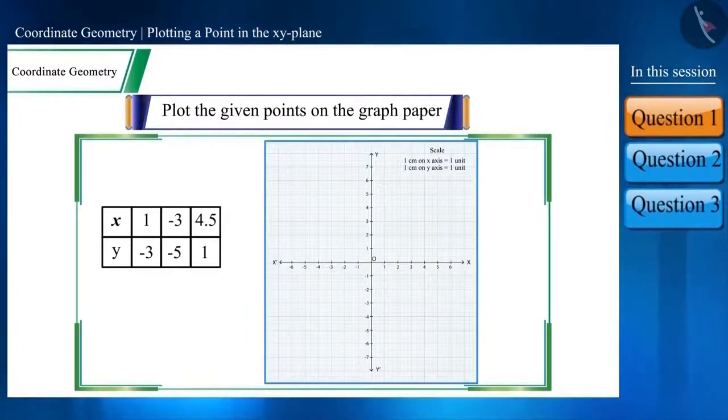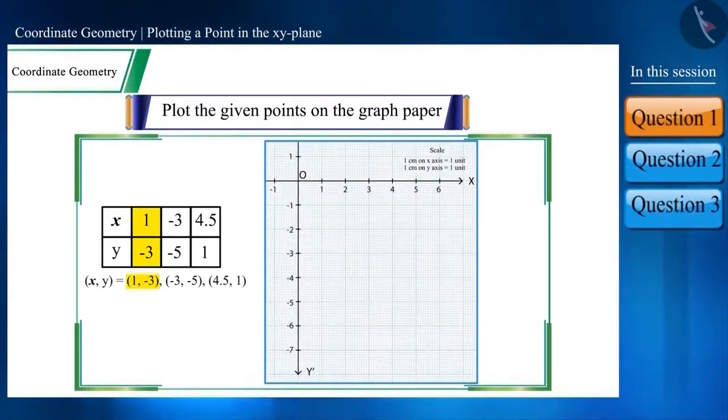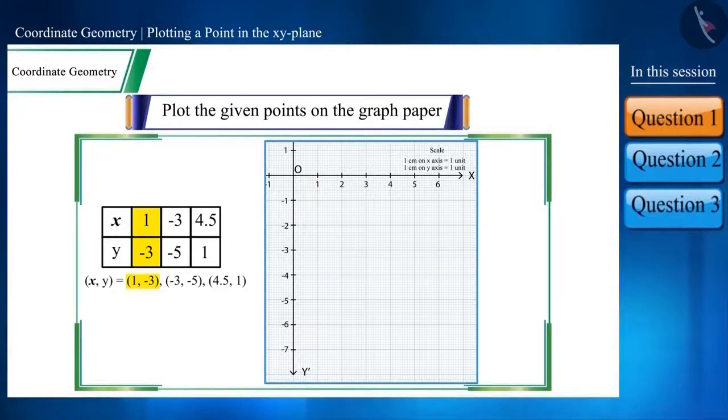You can also write these numbers in the form of coordinate points like this: (1, -3), (-3, -5), (4.5, 1). Friends, we will now plot the first point (1, -3). According to the methods described in the previous video, X coordinate is 1, so from 1 move the line to -3 on the Y axis and plot the point there.